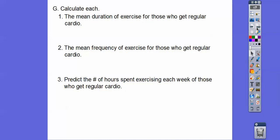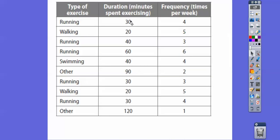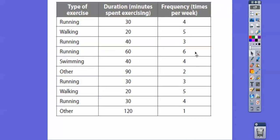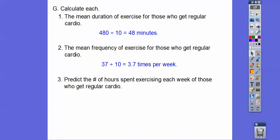All right. So calculate each, the mean duration of exercise for those who get regular cardio exercise. So the mean duration. So what we've got to do is add all these up and divide it by 10. So 480 divided by 10 is 48 minutes. That was in minutes. What's the mean frequency of exercise for those who get regular cardio? So what we've got to do now is here's the frequency, the number of times per week. We're going to add that up and divide it by 10. So it's 37 divided by 10 is 3.7.